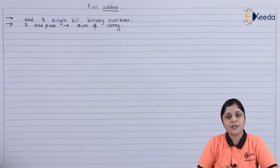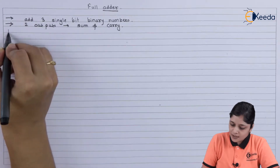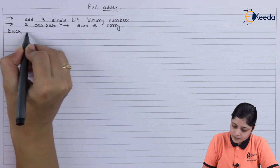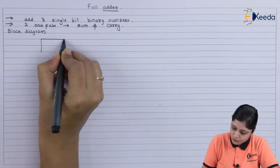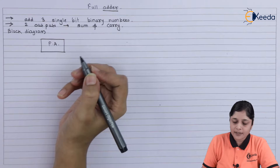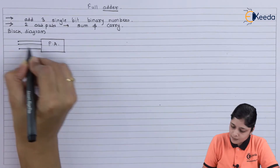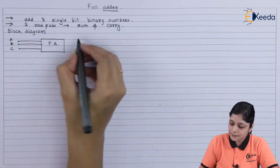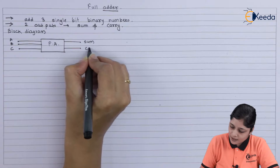If you compare with a half adder: a half adder is used to add two bits, and a full adder is used to add three binary bits. If you consider the block diagram, it consists of a full adder FA with three inputs — A, B, and C — and outputs sum and carry.